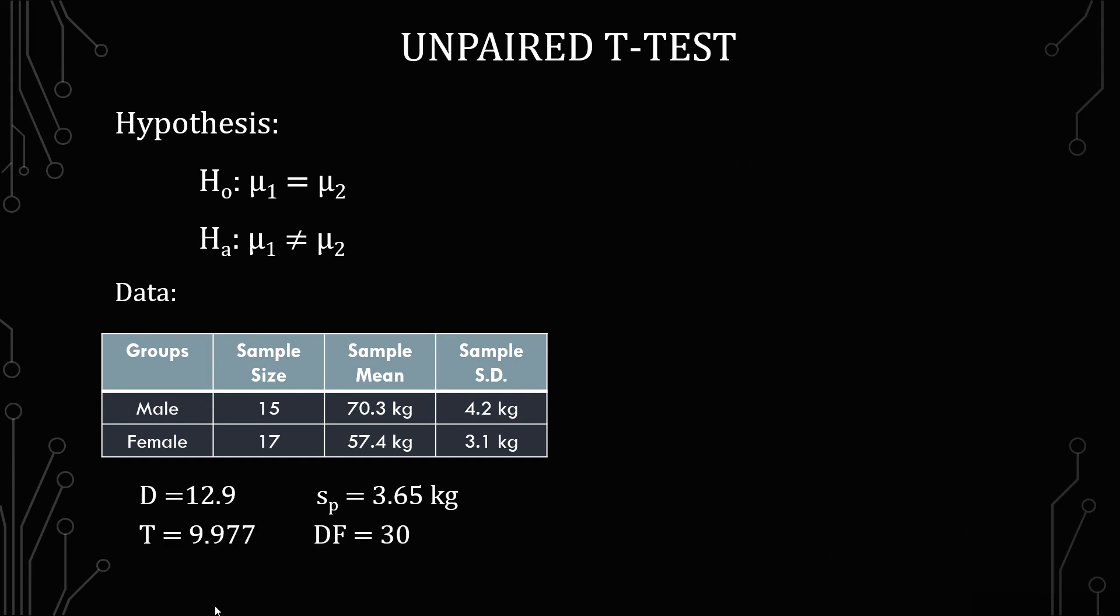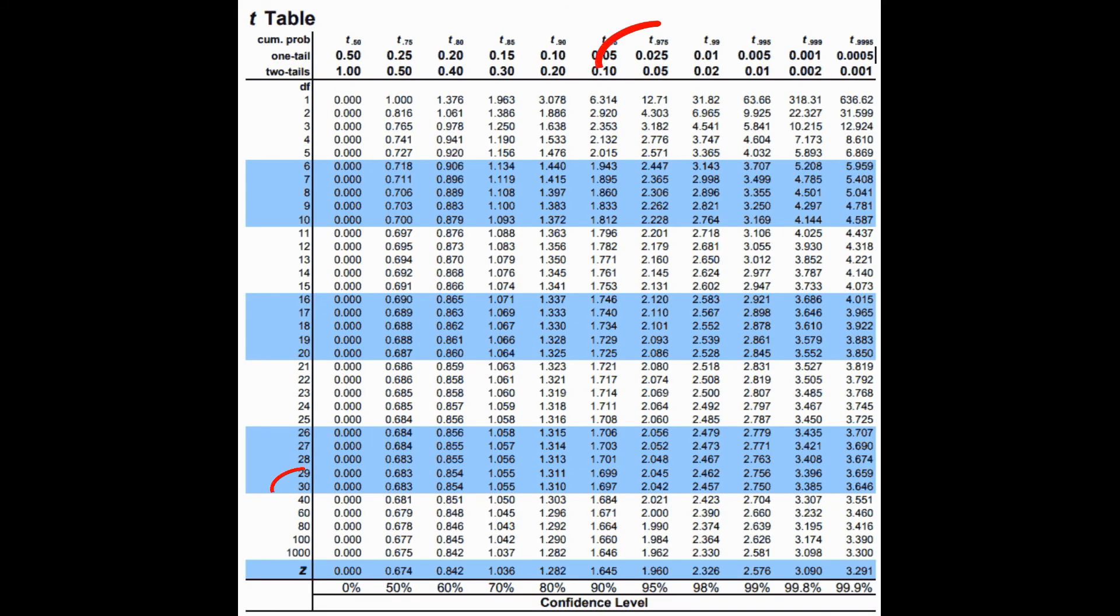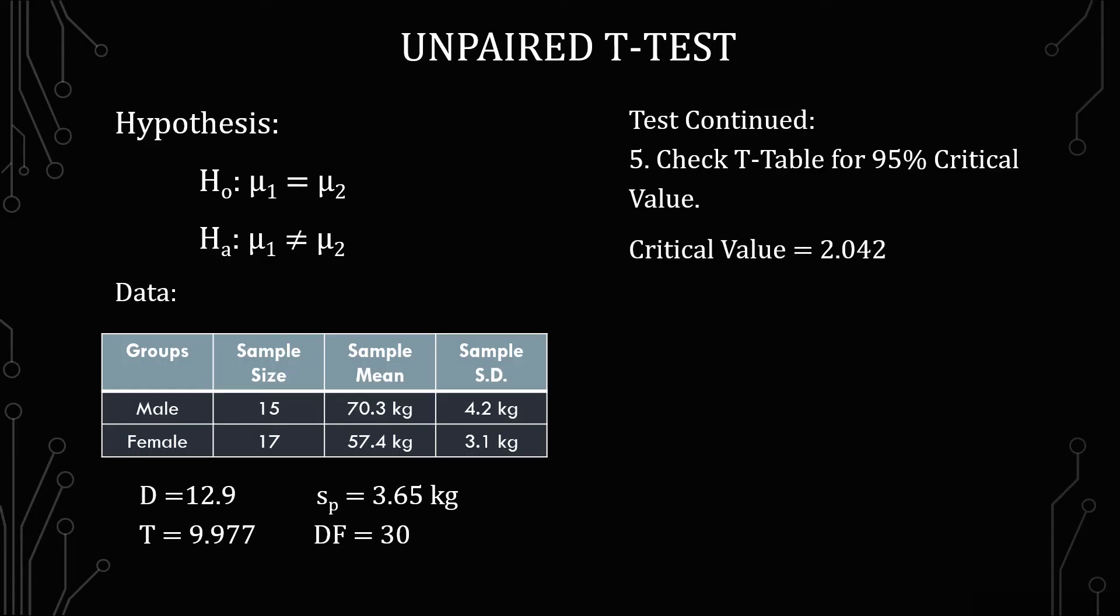Just like before we have in the lower left hand corner the calculated t statistic and the degrees of freedom. The next part is to check the t table for the 95% critical value. We're looking for two tails of 0.05 with the degrees of freedom of 30. And once we find that we see that the critical value is 2.042.